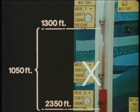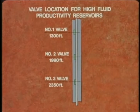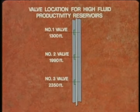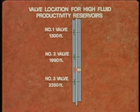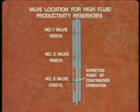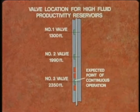Consequently, the well cannot be unloaded to valve number three and hence must produce with less reservoir drawdown and a resulting lower rate from the valve above. The location of the operating valve through which we will continuously inject gas is extremely important in a well where the fluid productivity of the reservoir is high. In such a well, valves near the expected point of continuous operation should be spaced close together to assure operating from the lowest point which the injection gas pressure and reservoir production will permit.